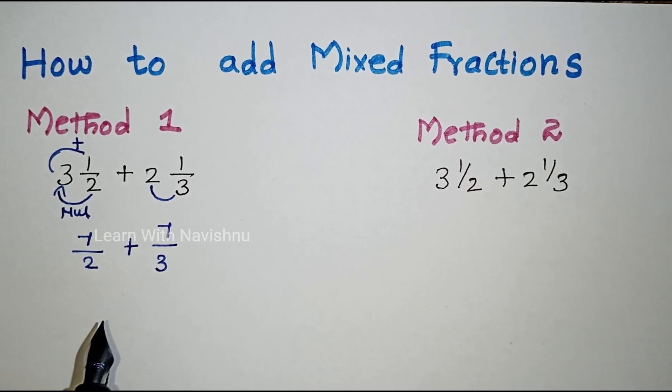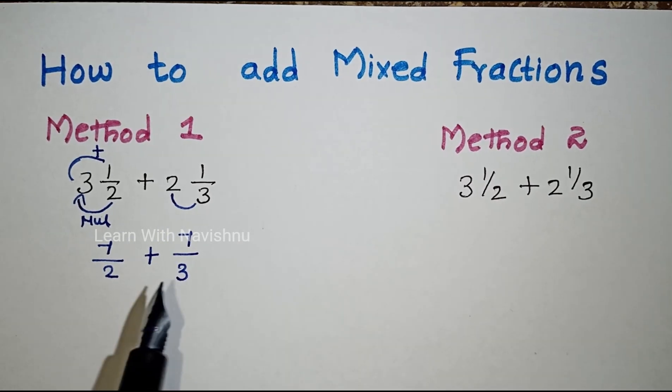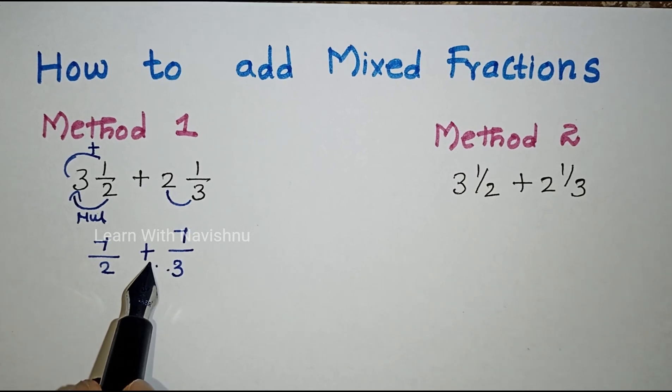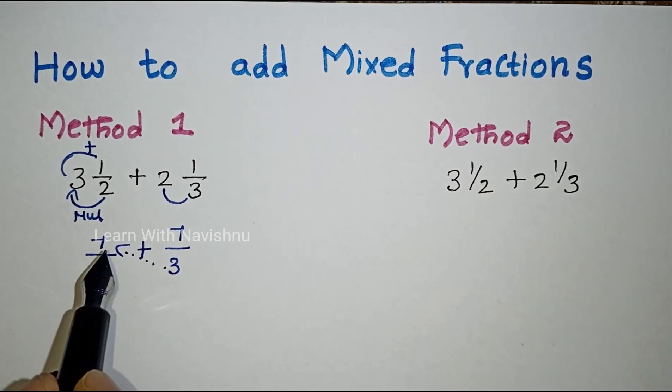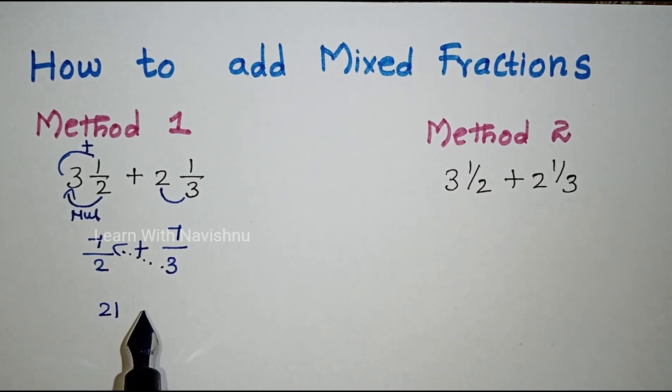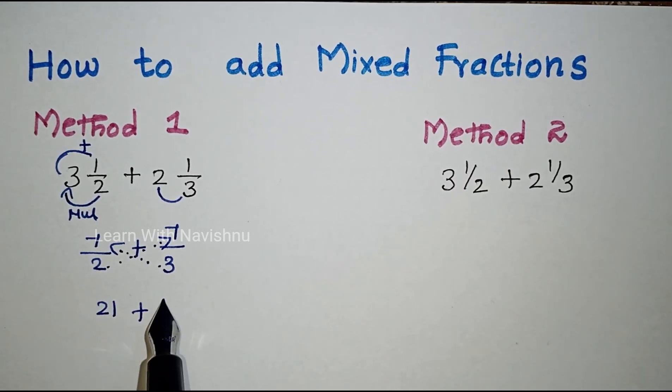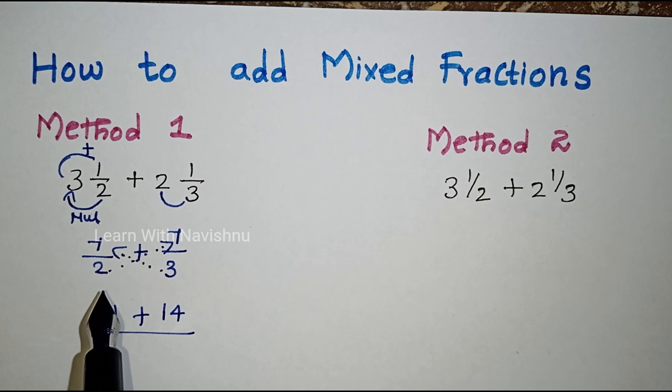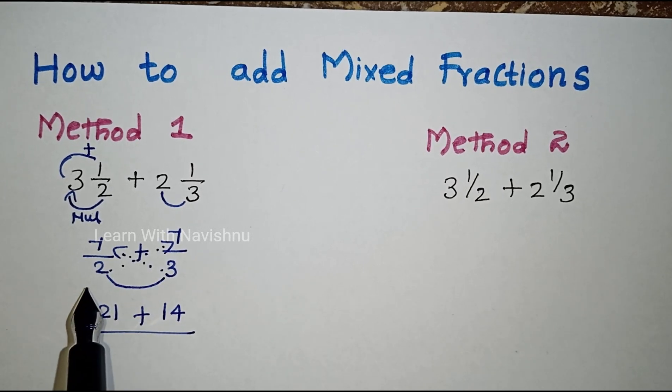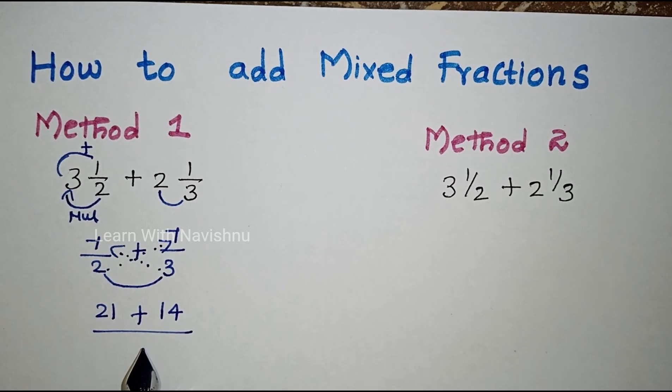We need fraction. First method: cross multiplication method, also called butterfly method. This denominator is 7. 3 times 7 is 21. Plus 2 times 7 is 14. Divide by the 2 denominators: 2 times 3 is 6.